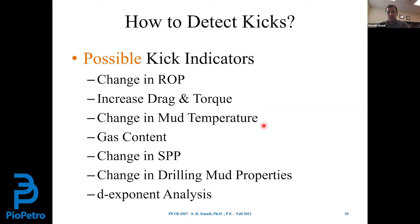The first possible kick indicator is a change in ROP. When a kick happens, we go underbalanced, and one advantage of underbalanced drilling is a higher rate of penetration. However, ROP may also increase when we change formation — for example, finishing a hard formation and entering a softer one — or when we change drilling parameters like weight on bit, RPM, or flow rates.